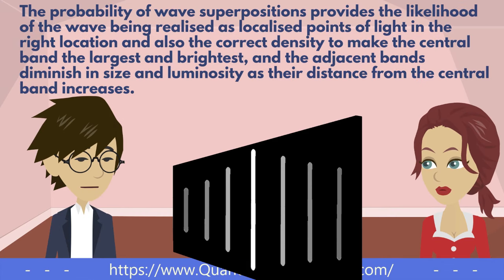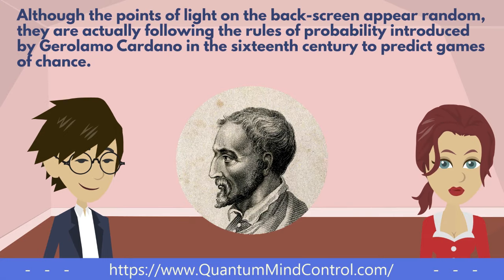The probability of wave superpositions provides the likelihood of the wave being realized as localized points of light in the right location, and also the correct density to make the central band the largest and brightest, with adjacent bands diminishing in size and luminosity as their distance from the central band increases. Although the points of light on the back screen appear random, they are actually following the rules of probability introduced by Geronimo Cardano in the 16th century to predict games of chance.